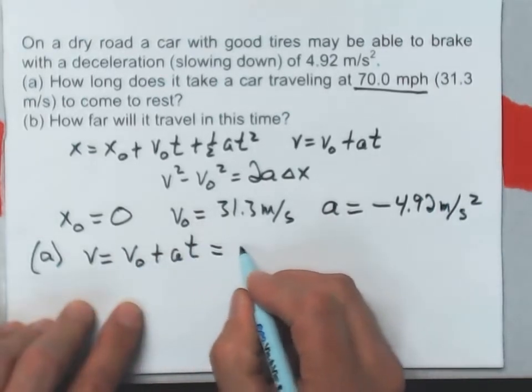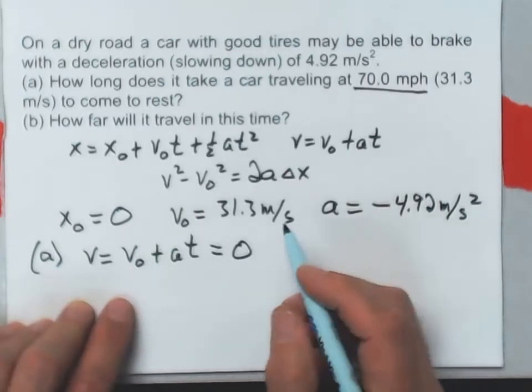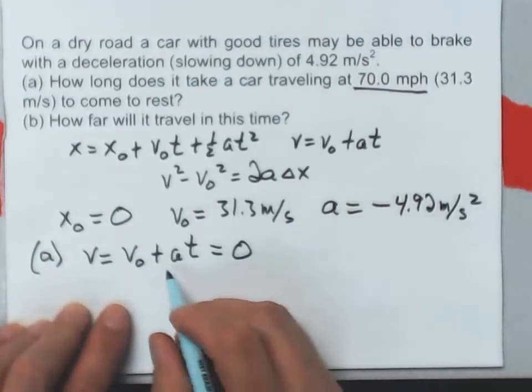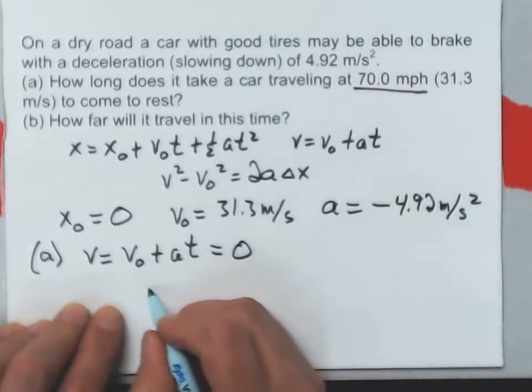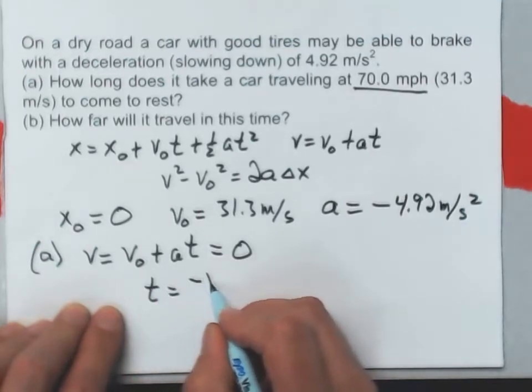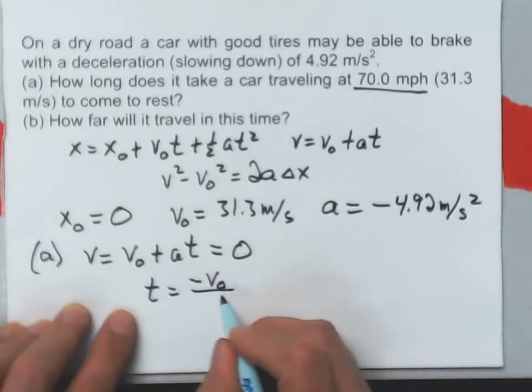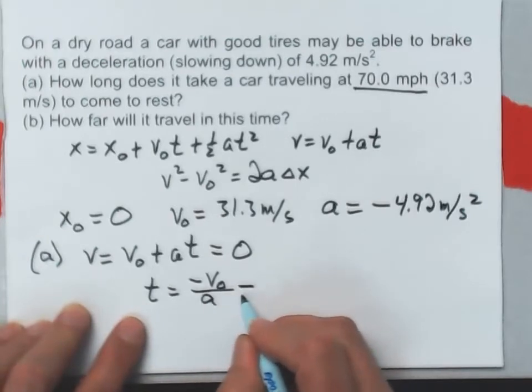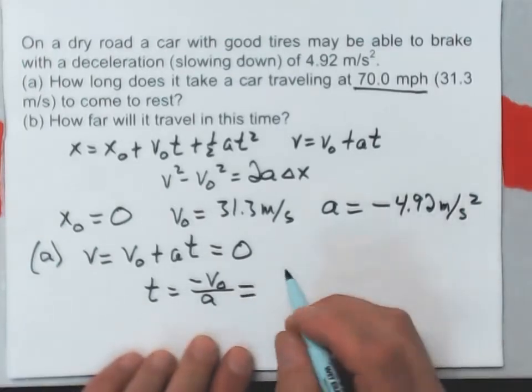So, v equals v naught plus a t. The velocity is going to be 0 at the end, so I set that equal to 0. If I solve for the time, I would get t is minus v naught over a. Well, just plug in the numbers here.